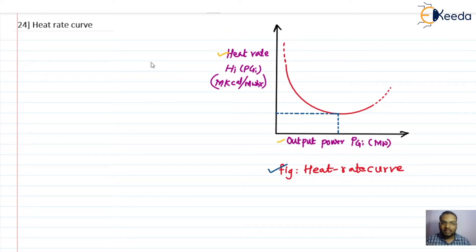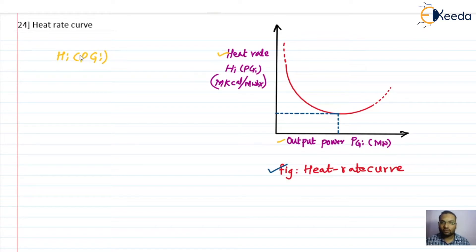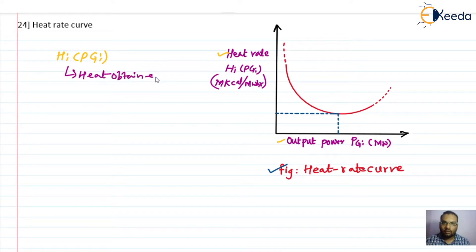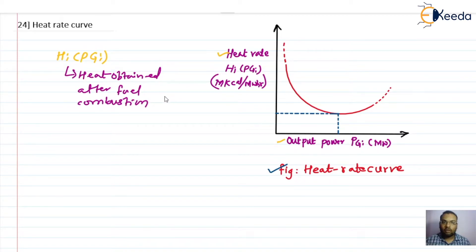The heat rate H(i), which is a function of the power output of unit i, is nothing but the heat obtained after the combustion of the fuel — the heat obtained after fuel combustion which is required to generate electrical output. We can plot this heat rate curve experimentally.